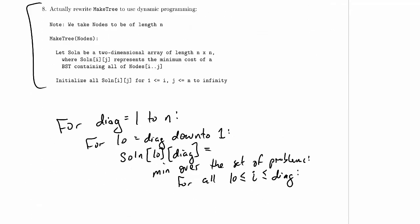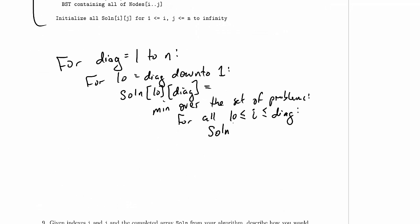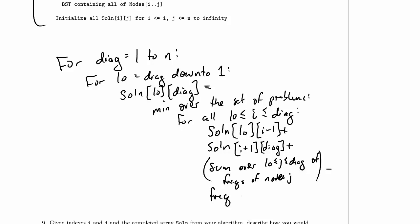So we're going to lookup in our solution table the left-hand side, that keeps low the same and makes high equal to i minus 1, plus the right-hand side, that keeps high the same and makes low equal to i plus 1, and high remember is just diag, plus the additional cost, which is the sum over low less than or equal to j less than or equal to diag of the frequency of nodes of node j, plus that sum minus the frequency of node i.